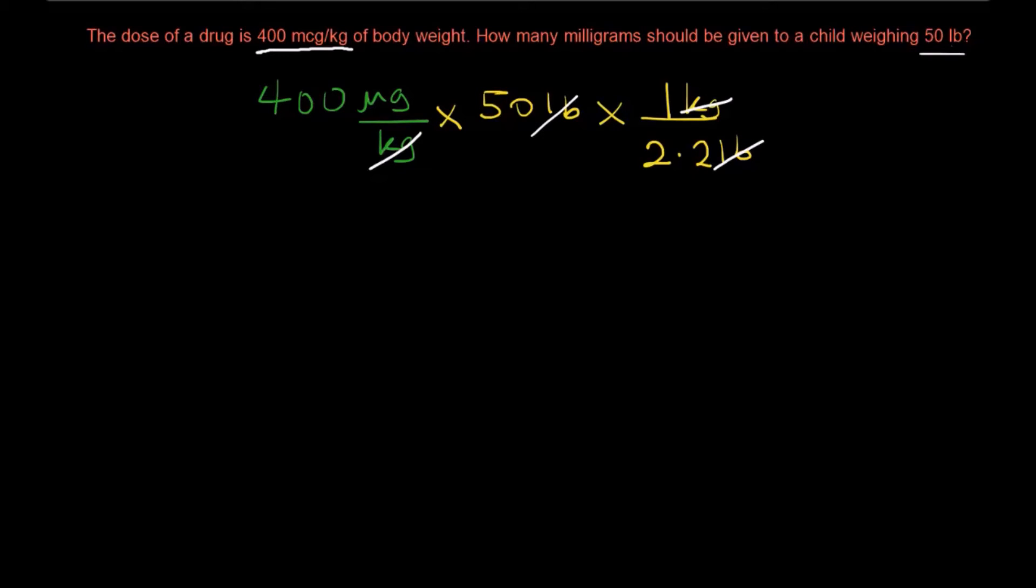Now you're left in units of only microgram. Okay everything cancelled out. So what we can do right now is multiply everything in the numerator and divide it by what is in the denominator. So when you have 400 times 50 divided by 2.2 that gives you